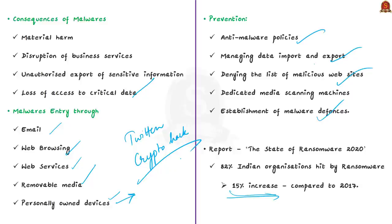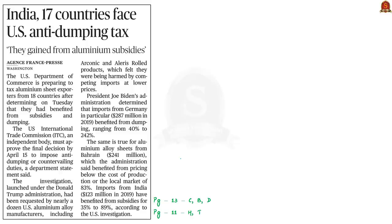The next discussion is based on a news article about the US Department of Commerce preparing to tax aluminum sheet exporters from 18 countries, including India, Bahrain, Brazil, Croatia, Egypt, Germany, and others. Once the US International Trade Commission makes the final decision, an anti-dumping duty or countervailing duty might be imposed on these countries. Let us discuss anti-dumping and countervailing duties from the Indian perspective.